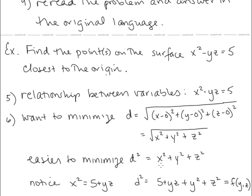Notice that d-squared still has three variables. We want to make use of the relationship between these variables to express this function in only two variables, and then use a second derivative test to find the minimum. The easiest way to substitute in would be to solve for x²: x² equals 5 plus yz. So d² equals 5 + yz + y² + z². For convenience, I'm going to call this f(y, z), and we want to find a minimum.